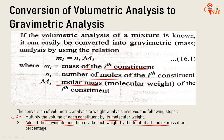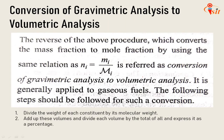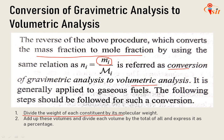The next is the reverse: converting gravimetric analysis to volumetric analysis. We do the reverse procedure, converting mass fraction to mole fraction using the relation Ni = Mi / μi. This is generally applied to gaseous fuels. The two steps are: first, divide the weight of each constituent by its molecular weight; second, add up all these volumes and divide each volume by the total of all, then express as a percentage.